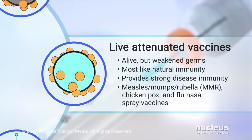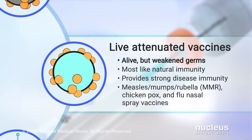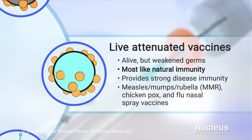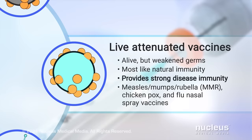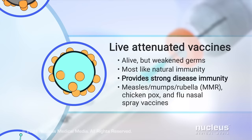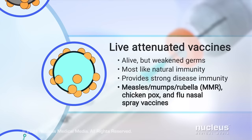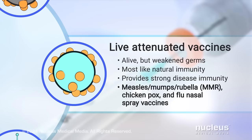Live attenuated vaccines use alive but weakened germs. They're most like a natural infection and provide a strong disease immunity. Examples are the measles, mumps, rubella, chickenpox, and flu nasal spray vaccines.